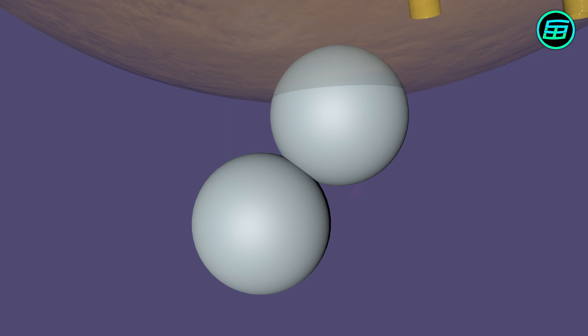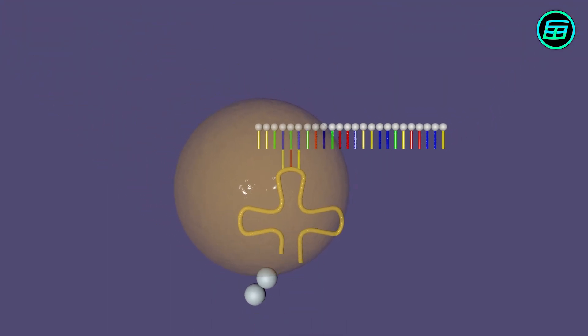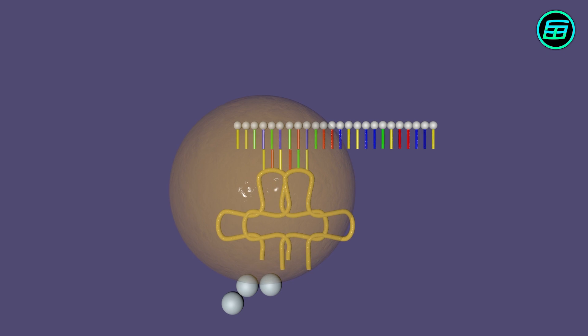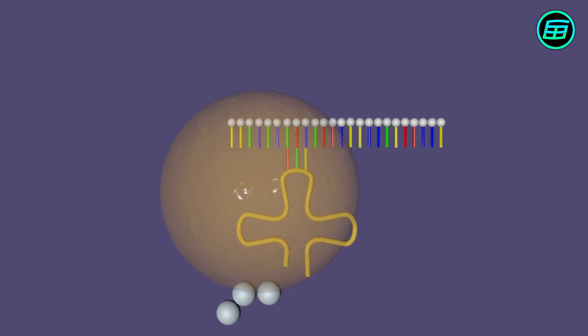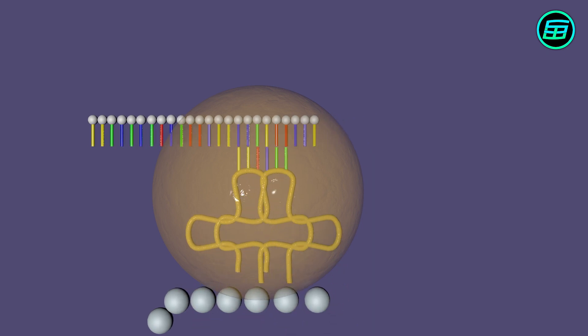After two connections, the ribosome releases the first tRNA molecule and moves on to the third codon, since only two tRNA molecules can be brought together by a single ribosome at any one time. The process continues until the ribosome encounters a stop codon.